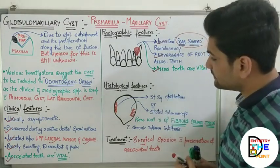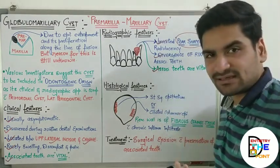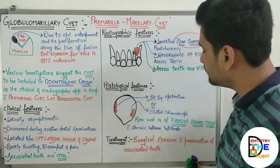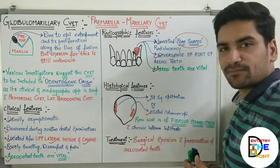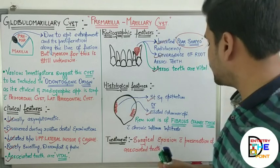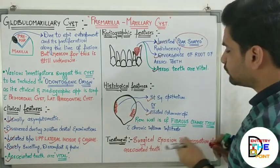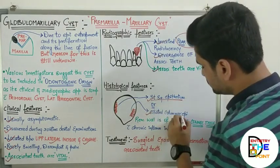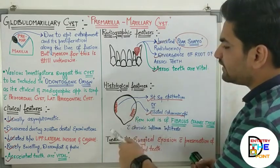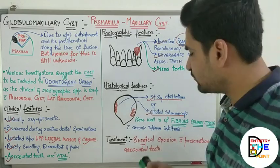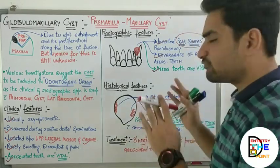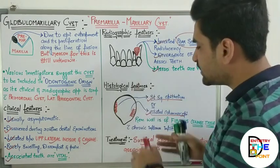Moving on to the histological features of globulomaxillary cyst: two types of epithelium can be present — first is stratified squamous epithelium, or you can also see ciliated columnar epithelium. Pseudostratified ciliated columnar epithelium is not seen; only stratified squamous and ciliated columnar epithelium are seen. The remaining cystic wall is made of fibrous connective tissue with chronic inflammatory cell infiltrate.